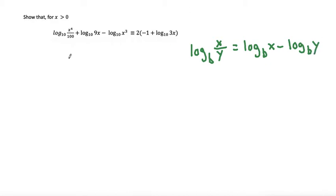So I'm going to start by separating this into log base 10 of x to the power of 4, the top part, minus log base 10 of the bottom, which is 100. And I'll bring down the rest of the left-hand side.